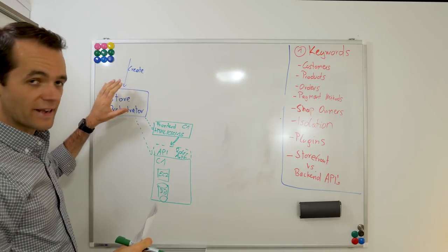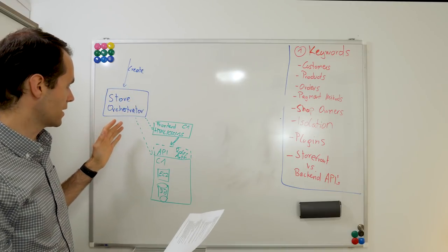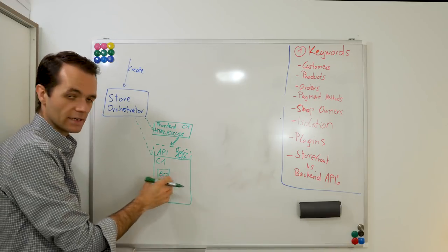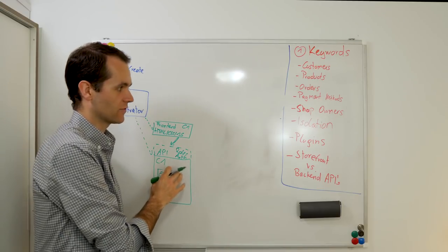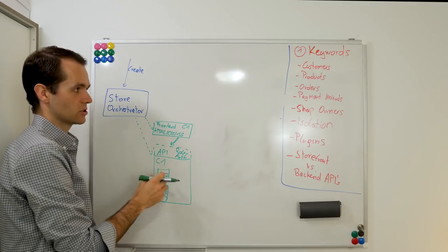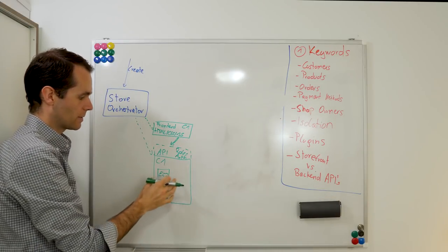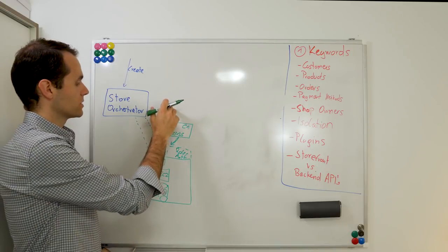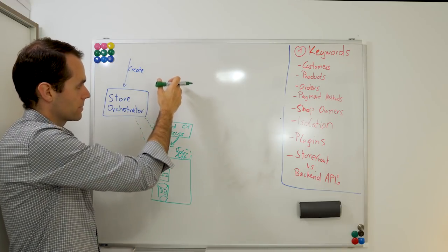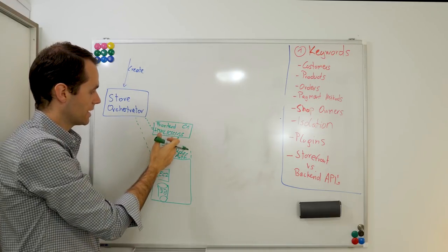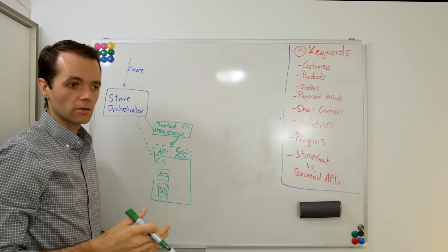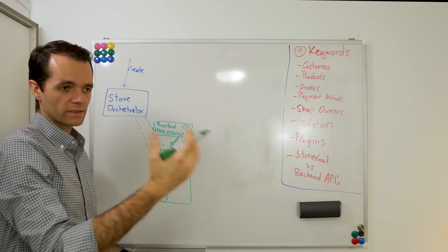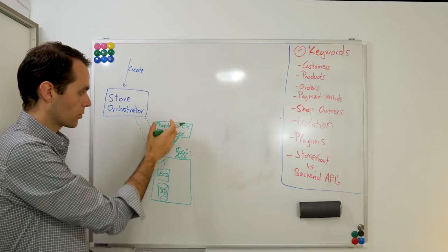Now let's talk about how traffic comes into the system and hits the frontend. Shopify could have its own proxy layer that takes all requests and forwards them to your system. This proxy layer is owned by Shopify. The store orchestrator also takes care of DNS and domain management — CNAME management — and you also pay for a top-level domain. The store orchestrator populates the DNS with the new domain and points it to the proxy layer.